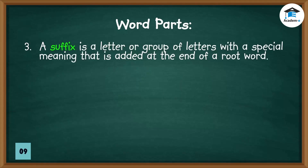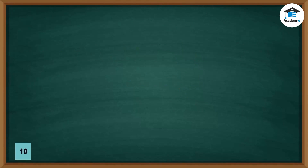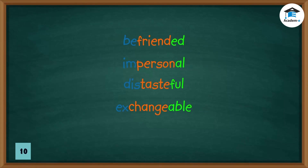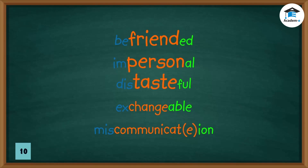A suffix is a letter or group of letters with a special meaning that is added at the end of a root word. In our example, '-ist' is the suffix in the word nonconformist — it means 'one who does something.' Here are some more examples of three-part words: befriended, impersonal, distasteful, exchangeable, miscommunication.